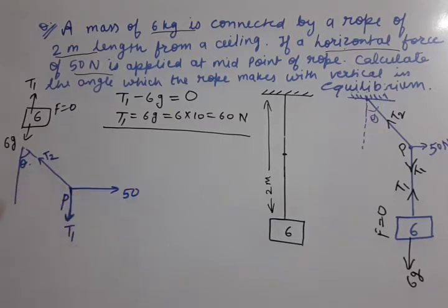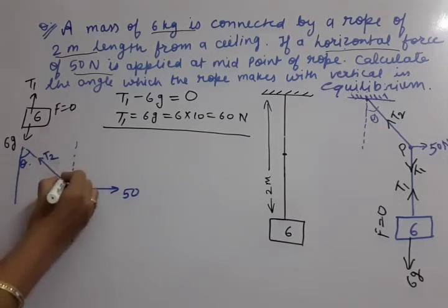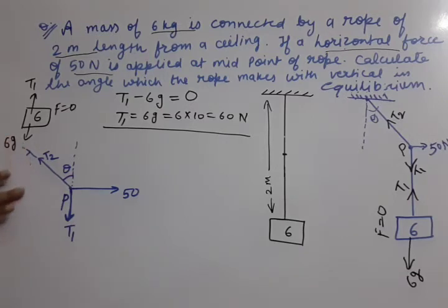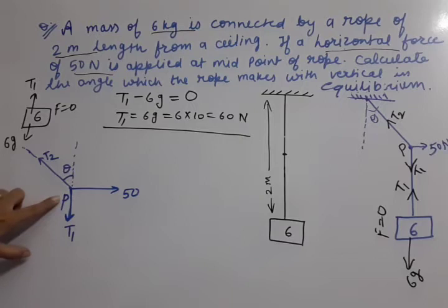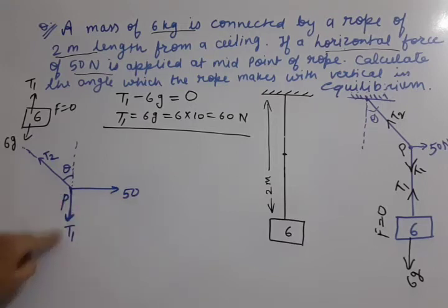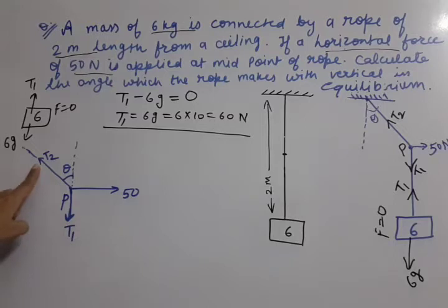Now we have shown all the forces at point P. Notice that 50 Newton is in the horizontal direction, T1 is in the vertical direction, but T2 is in between horizontal and vertical. Whenever a force is in between directions, we use the resolution technique — we divide this vector into two components. The component along the vertical (where theta is formed) is T2 cos theta, and the horizontal component is T2 sin theta.